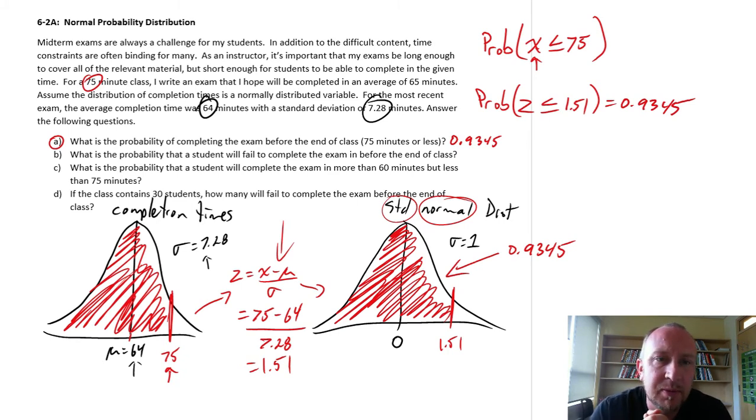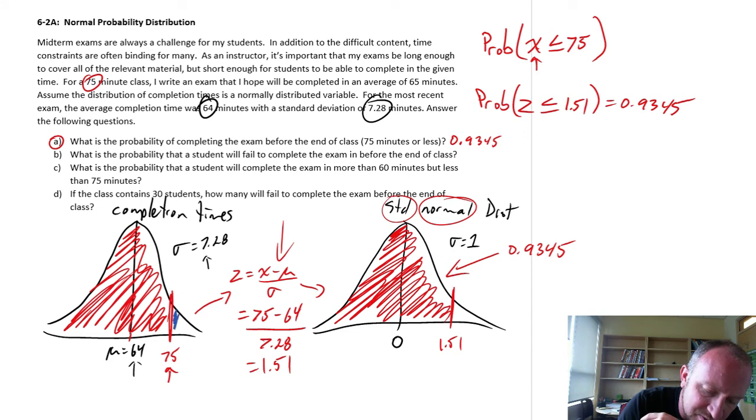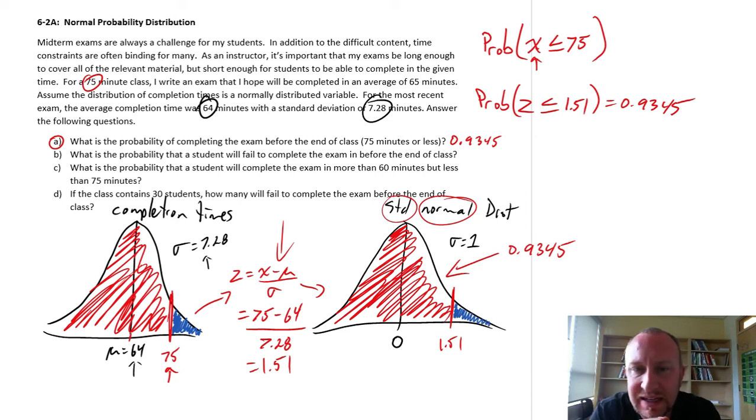Good. Part B. What is the probability that a student will fail to complete the exam before the end of class? So here we're looking at the complement of the event. We either finish it on time, or we don't finish it on time. Well, if this red shaded area represents the probability of completing it before the end of class, well then the complement to that would be, here's that probability of completing it after the end of class, or in other words, not having enough time. Which corresponds to our standard normal distribution up here, as the area under the curve.